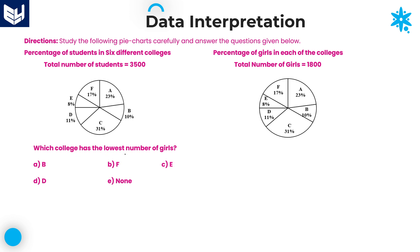Second question: which college has the lowest number of girls? Here, just compare the percentage values in the pie chart. The values are 23, 20, 31, 11, 8, 17. Comparing all, college E has 8% which is the lowest. So college E has the lowest number of girls — option C is the right answer. No calculation is required, just comparison.